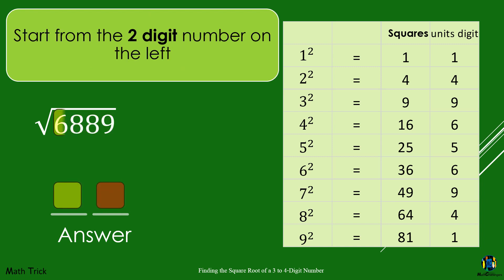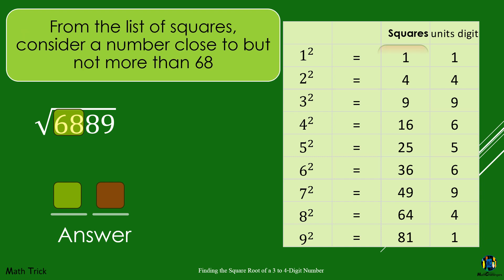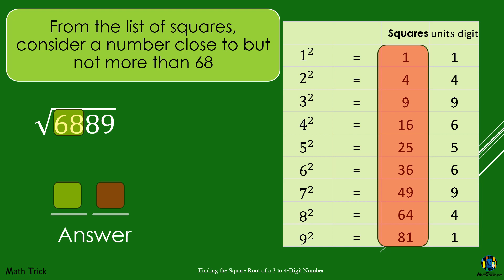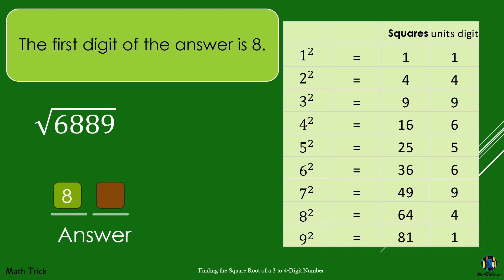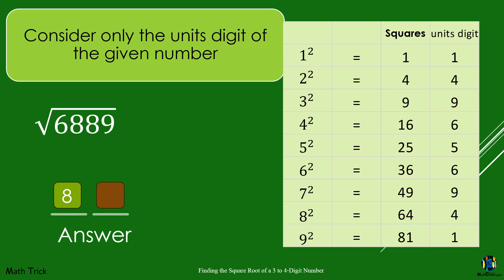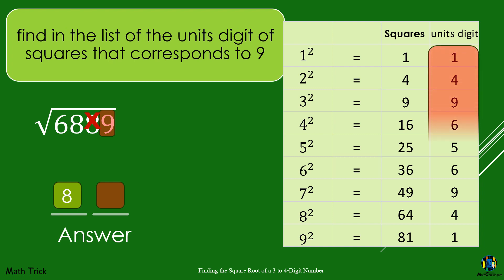Let's start from the 2-digit number on the left. From the list of squares of 1 to 9, consider a square which is nearer to but not more than 68. Here it is 64, which is nearer to as well as lesser than 68. Hence the square root of 64, which is 8, is taken. The first digit of the answer is 8. For the 2-digit number on the right of 6,889, just consider the 1's digit and ignore the 10's digit, in this case, 9.